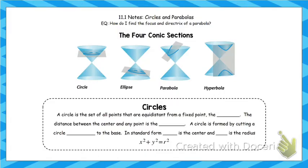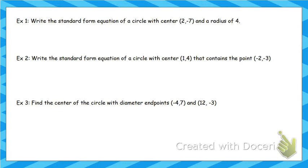Let's look at some examples. We're going to write the standard form equation for a circle with a center of (2, −7) and a radius of 4. We plug into the equation: x minus 2 squared plus y minus negative 7 — so y plus 7 squared — equals r squared, which is 16. And that's it.